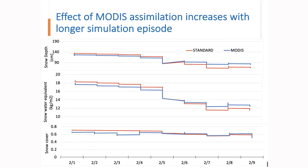Looking at the time evolution of WAF estimates of snow depth, snow water equivalent, and snow cover between default WAF configuration (red) and MODIS assimilation (blue), the difference between the two cases becomes larger toward the later part of the episode. Snow in default WAF seems to melt or deplete more quickly than in the MODIS simulation. This implies that albedo and snow cover retain higher values for longer in the MODIS simulation, which may translate to a positive effect in terms of ozone formation.